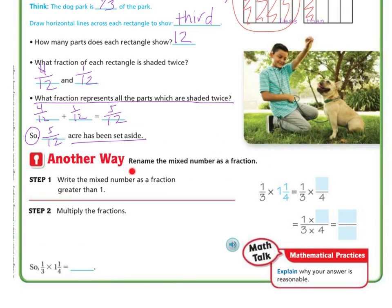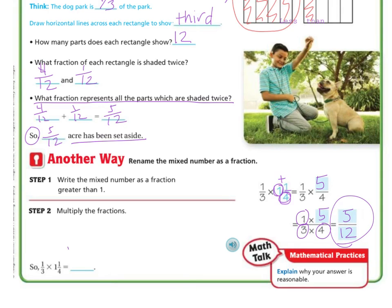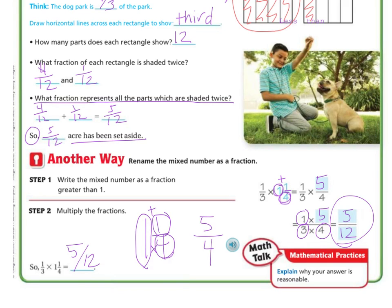If you do not want to use the model, another way is to rename the mixed numbers as a fraction greater than one. For example, one-third times one and one-fourth: take the mixed number one and one-fourth and rewrite it. It's four times one plus the one — four times one is four, plus one is five — so we get five over four. Now we have one times five over three times four. One times five is five, three times four is twelve, so our answer is five-twelfths — exactly what we got with the model.